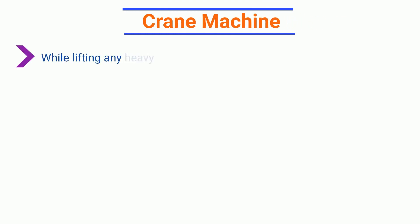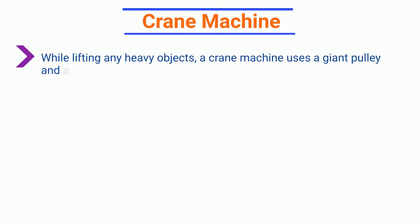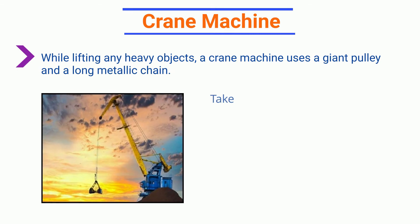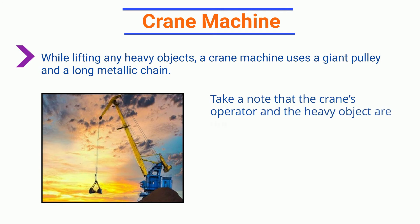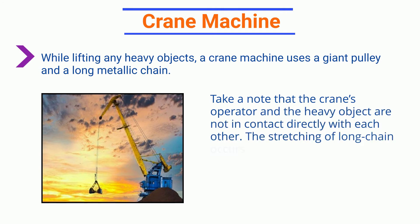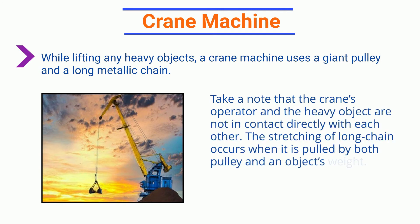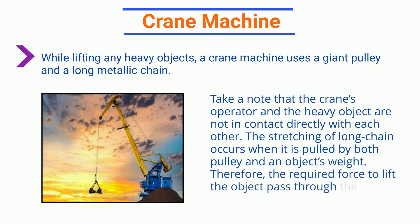Crane Machine. While lifting any heavy objects, a crane machine uses a giant pulley and a long metallic chain. Note that the crane's operator and the heavy object are not in direct contact with each other. The stretching of the long chain occurs when it is pulled by both the pulley and the object's weight. Therefore, the required force to lift the object is passed through the chain in terms of tension force.